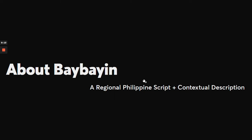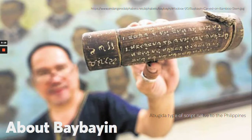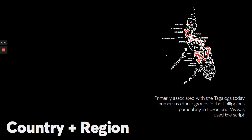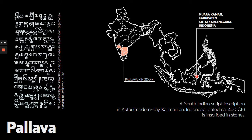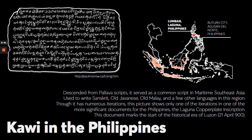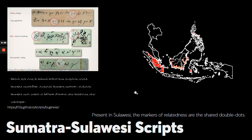Baybayin is a representative script of the Philippines. Although it is primarily associated with the Tagalogs, this script has been used by other ethnic groups in the Philippines like the Ilocanos, the Visayans, and the Bicolanos. Some of its better known relatives are the Pallava script, the Kawi script, which is also a marker of our history, and the Sumatra-Sulawesi scripts, in which the Bugis and Old Macassar scripts are members of this family.